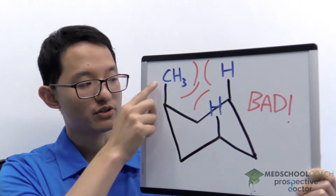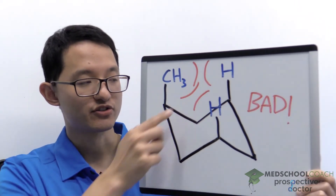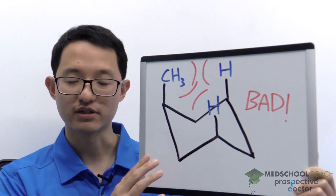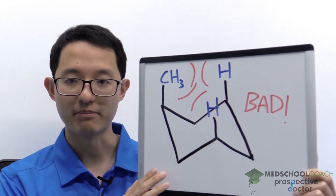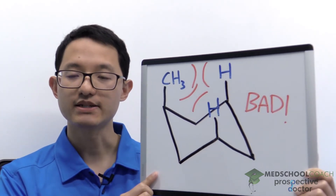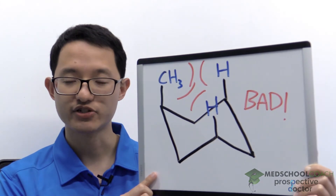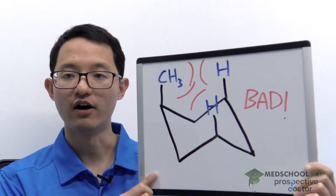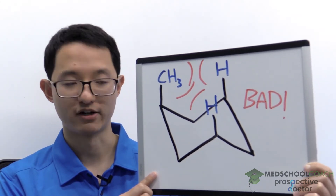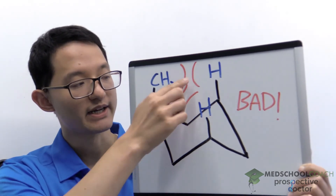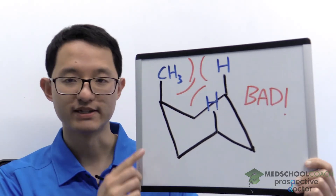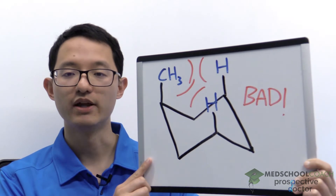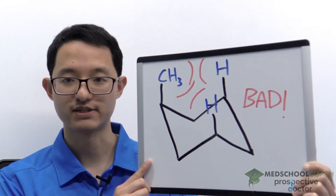Now, because these groups are all in the axial positions, they're close enough that their electron clouds will partially overlap. And because electrons are all negatively charged, when the electron clouds overlap, that is an unfavorable interaction. So you can see in red here, we've drawn the steric clashing that's going on between these 1,3-diaxial substituents.